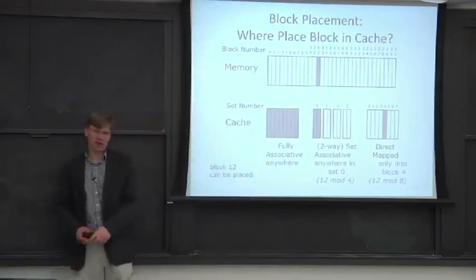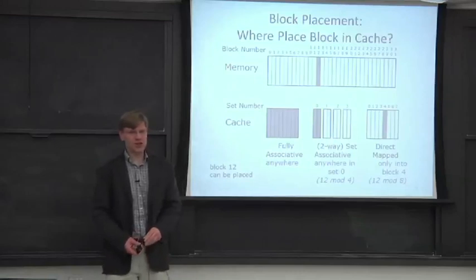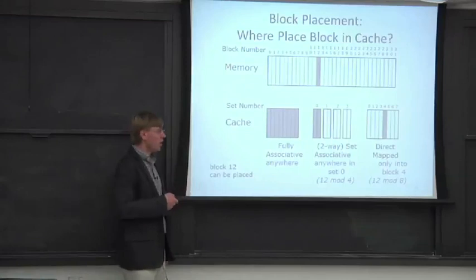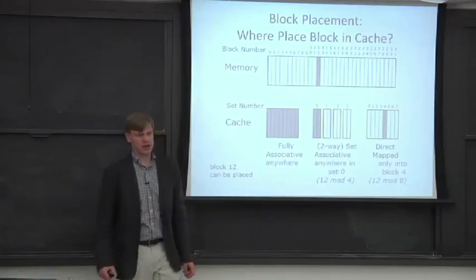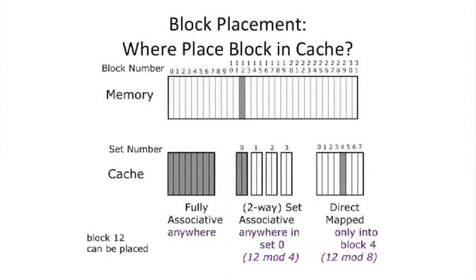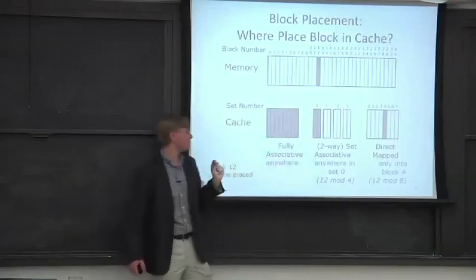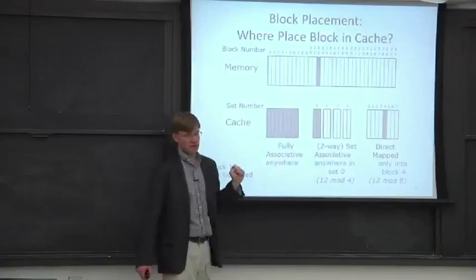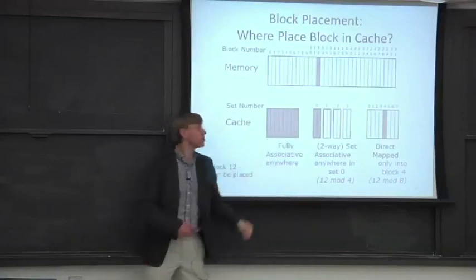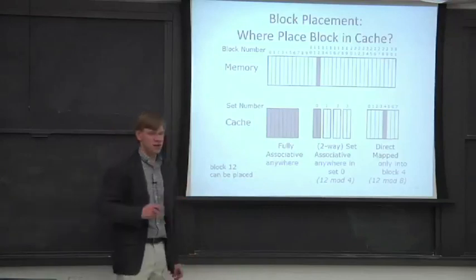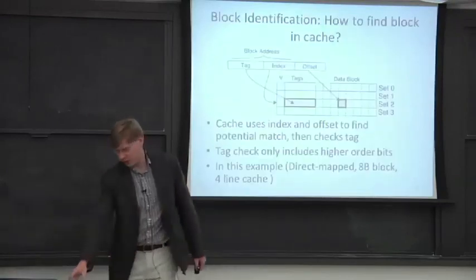Fully associative caches have associativity equal to the total number of cache entries, meaning a block can be placed anywhere in the cache. For an 8-entry fully associative cache, block 12 can go into any of the eight locations. The next question is how to actually find a block given an address.